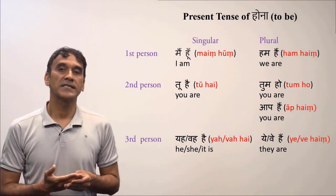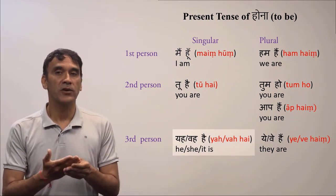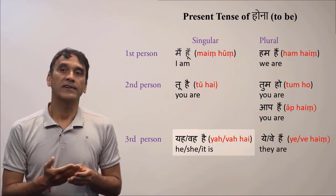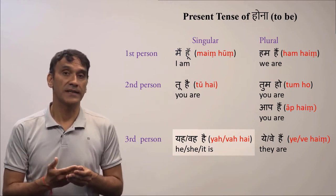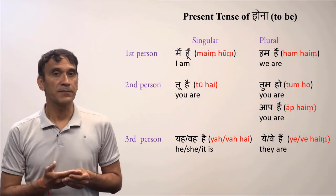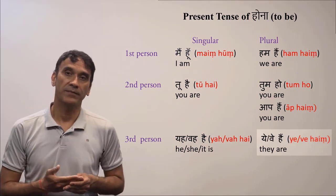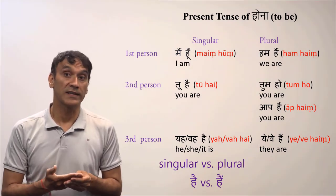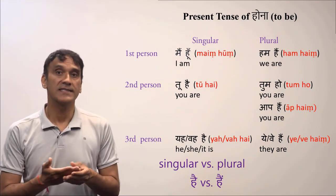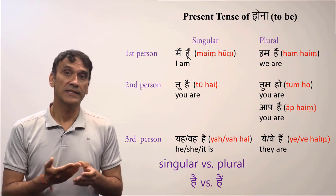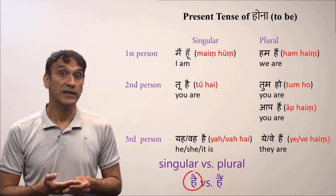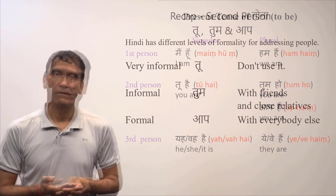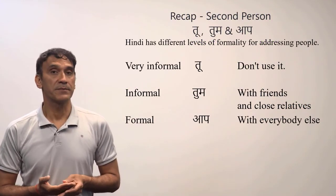For third person singular: YAH HAIN or VAH HAIN — also pronounced YE HAIN or WO HAIN — are translated as 'he is,' 'she is,' or 'it is.' For third person plural, it is YE HAIN or VAH HAIN, meaning 'they are.' The distinction between singular and plural is nasalization: the plural has nasalization and the singular does not.